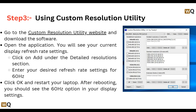You can add 60 Hz by using the Custom Resolution Utility. Go to the Custom Resolution Utility website, download the software, open the application, and you will see your current display refresh rate settings. Click Add under the Detail Resolution section.